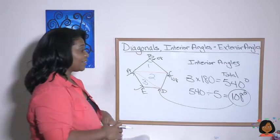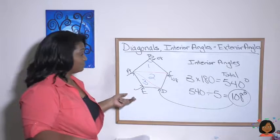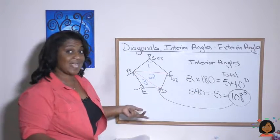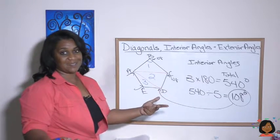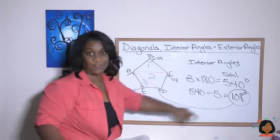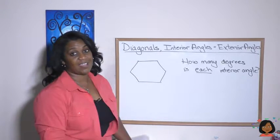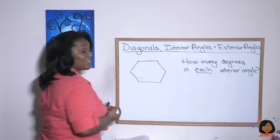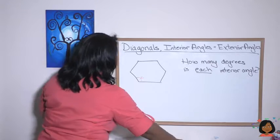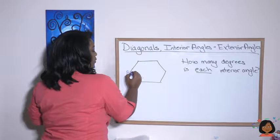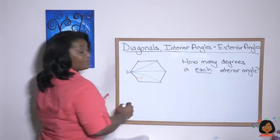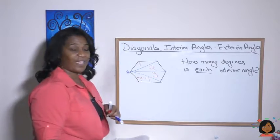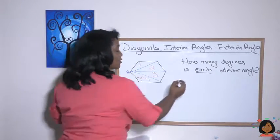So to summarize: diagonals divide the polygon into triangles, we multiply the number of triangles by 180 to get total degrees, then divide by the number of vertices. Now let's try a hexagon — six sides. Drawing diagonals from one vertex gives us one, two, three, and four triangles.